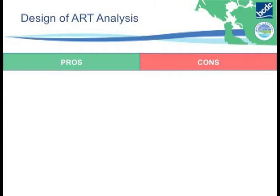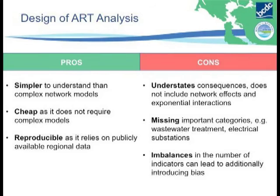To break it down in closing: the pros of this approach are that it's simpler to understand than complicated black-box network models, it's straightforward, cheap, and reproducible. On the con side, it does understate consequences because it does not include network effects yet, and it may be missing some important categories like treatment plants. The choices made in indicators will by definition have effects on the weighting.